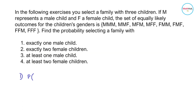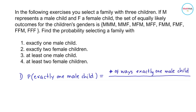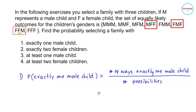For number one, the probability of selecting a family with exactly one male child can be computed by dividing the number of ways exactly one male child can occur by the total number of possibilities. Counting the outcomes with exactly one male child gives us three ways. Divided by the total number of possibilities, which is eight, the probability is three over eight.